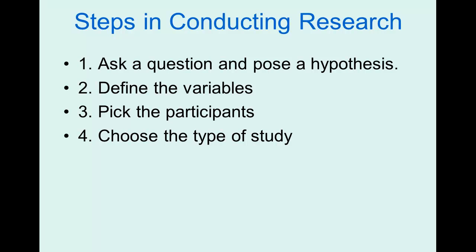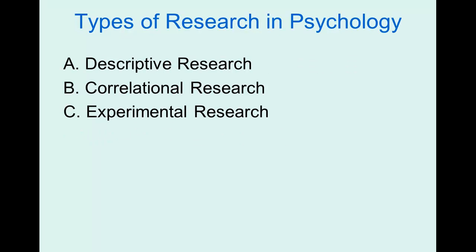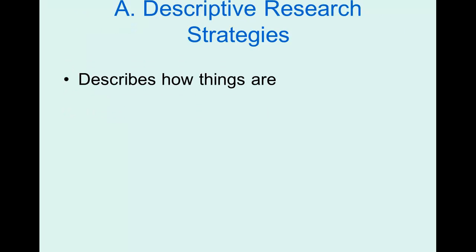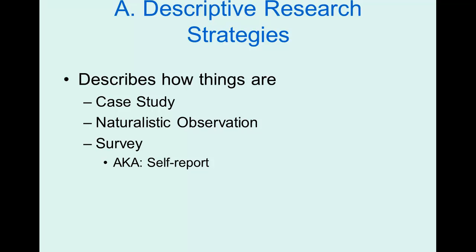So we've asked a question and posed our hypothesis, defined our variables via operational definitions, and picked our participants — probably a randomly collected sample. Now we need to choose the type of study. There are three types of research in psychology: descriptive research, correlational research, and experimental research. Starting with descriptive research, the goal is simply to describe things how they are, often using a case study, naturalistic observation, or survey — which is what I referred to earlier as self-report.